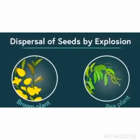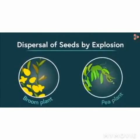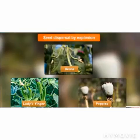Next is dispersal of seeds by explosion. Here explosion means the bursting of fruit pods and scattering of seeds by themselves. You might have seen pea plants that explode when they dry up. Examples of seeds dispersed by explosion are beans, lady's finger, poppies, etc.